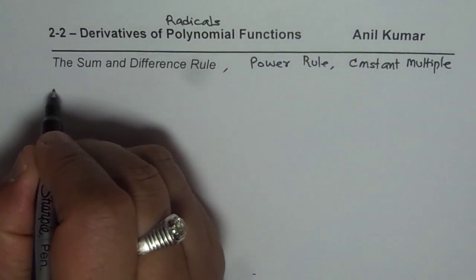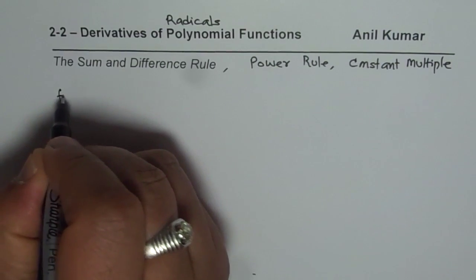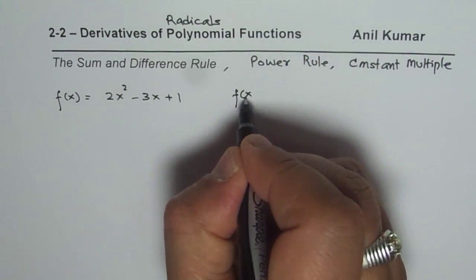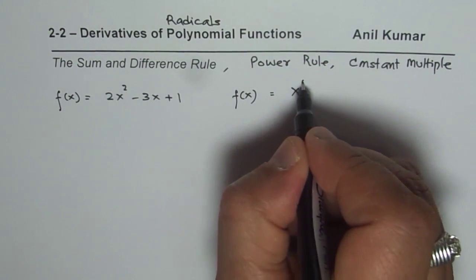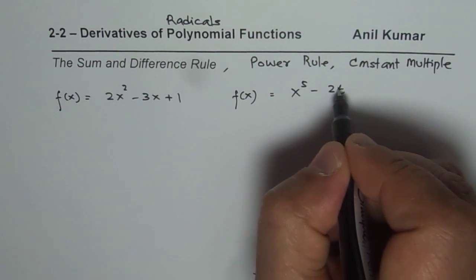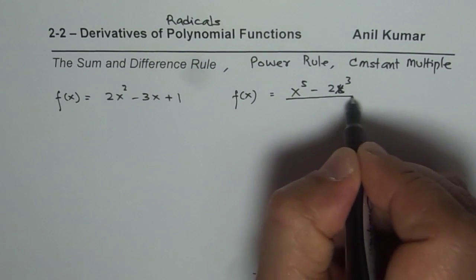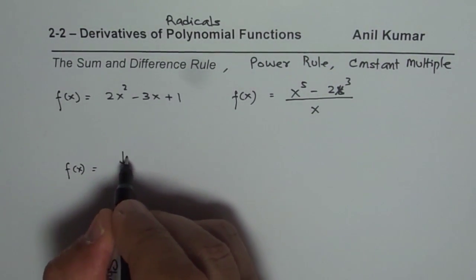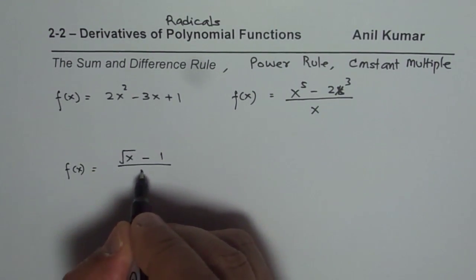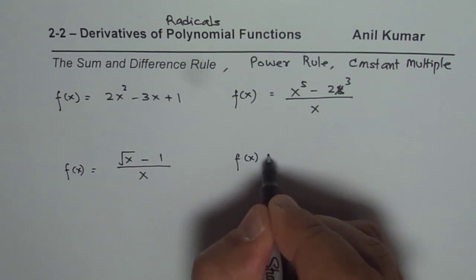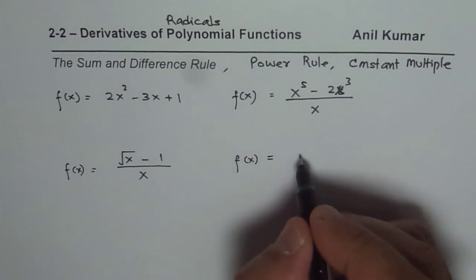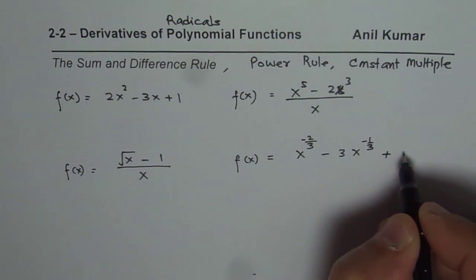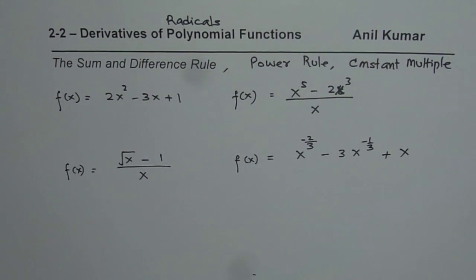Let me write down the functions for you and then you find their derivatives. The first is f(x) = 2x² - 3x + 1, which is a quadratic function. The second is x⁵/x - 2x³/x. The third is √x - 1/x. The fourth uses negative powers: x^(-2/3) - 3x^(-1/3) + x. Let these be the functions to practice.